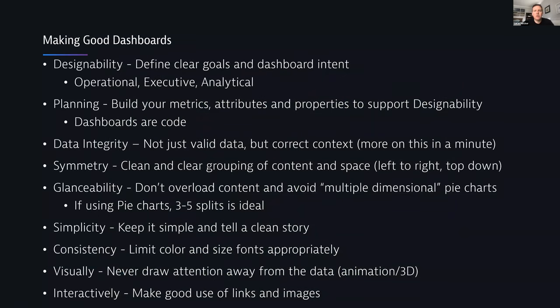John takes over on what makes a good dashboard. The main highlighted points organize into a progression from creating a dashboard from the get-go. The very first thing to look at is designability — get clear defined goals from whoever's going to be the user. Dashboards typically fall into three categories: operational, executive, and analytic. The key thing is to treat dashboards and everything associated with them as code, where metrics, attributes, and properties support designability.